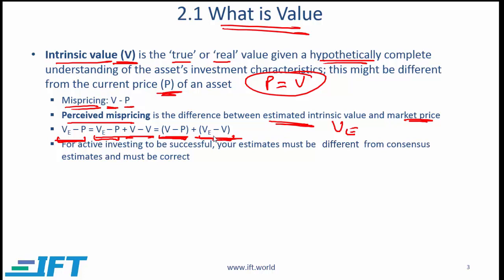If you are an active investor trying to identify underpriced securities, two things need to happen for you to be successful in the long run. First, V and P need to be different — in a completely efficient market the value equals price, so you need to be operating in a market that is not efficient where you can make abnormal returns. Second, the difference between your estimated value and the true intrinsic value should be as low as possible. If this term is close to zero and assets are underpriced — meaning P is relatively low and the true intrinsic value is relatively high — then you as an active manager will make money.